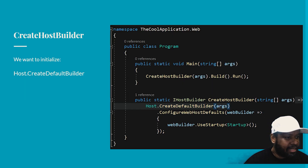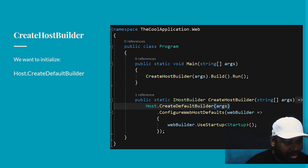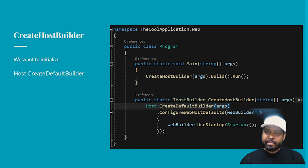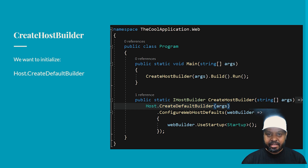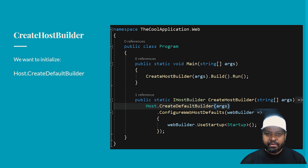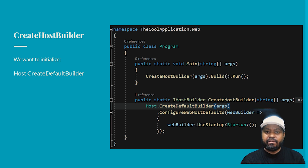The line highlighted now is Host.CreateDefaultBuilder(args). That right there is the generic host. So when I asked earlier what the generic host is — that is the preferred way for hosting the things you need for a .NET Core application. This is the direction we go forward from here.